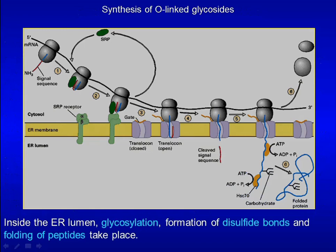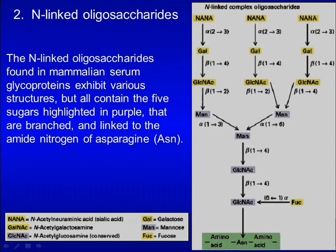In this diagram, the cytosol and ER lumen are shown. Inside the ER lumen, glycosylation, formation of disulfide bonds, and folding of peptides take place. The N-linked oligosaccharides found in mammalian serum glycoproteins have various structures, but all contain five sugars highlighted: two N-acetylglucosamine and three mannose residues.